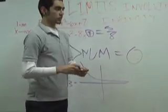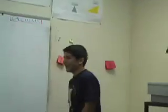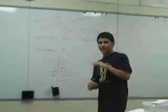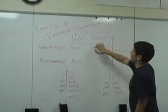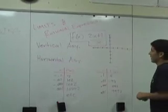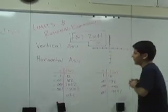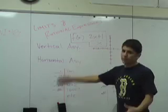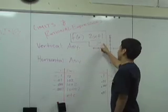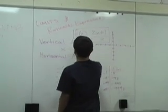Gabriel is going to explain vertical asymptotes. His subject is limits of rational expressions. Here is a rational expression: 2x plus 1 over x. To find the vertical asymptote, the denominator has to equal zero. In this case, x equals zero is your vertical asymptote.